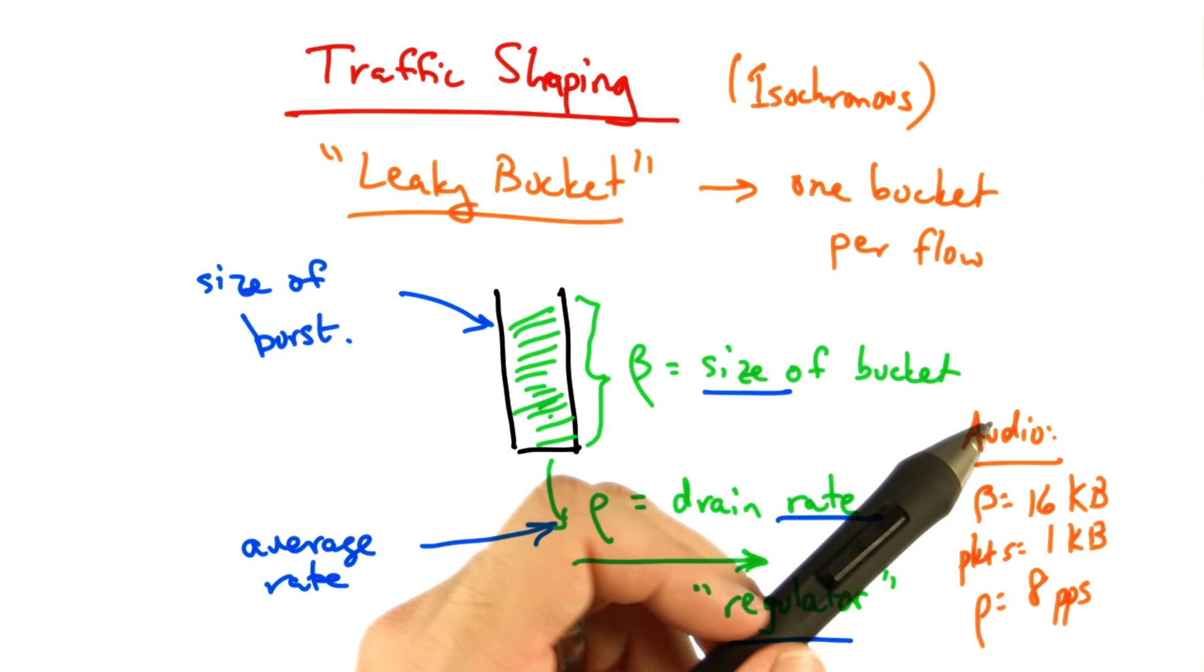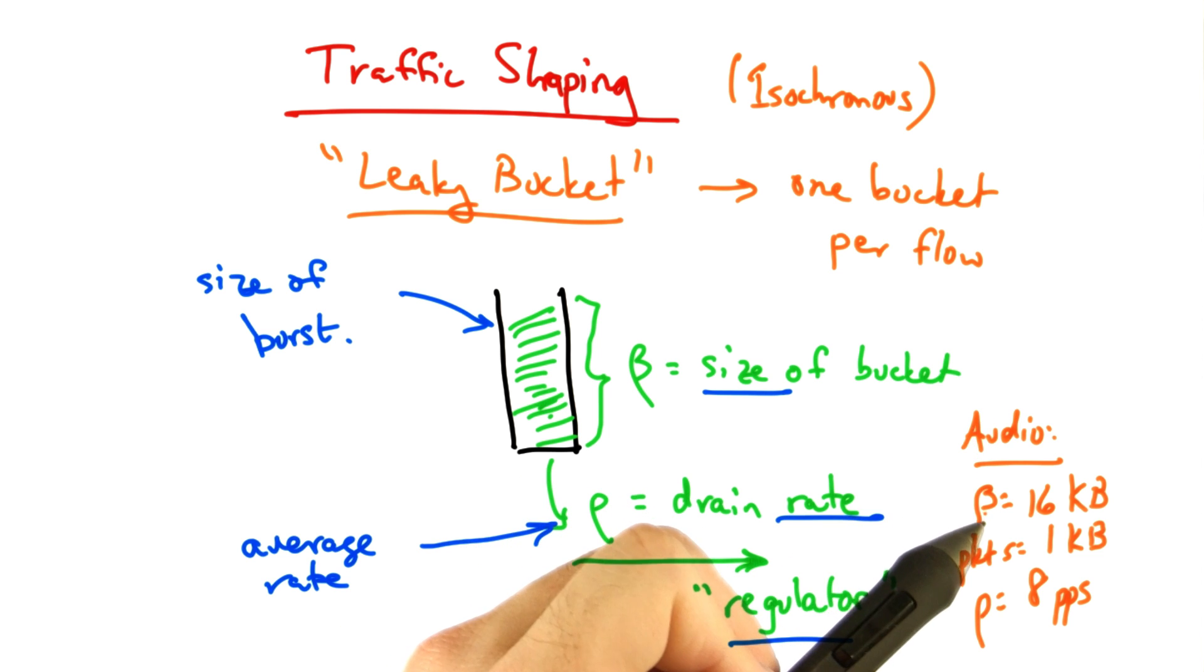For example, for an audio application, one might consider setting the size of the bucket to be 16 kilobytes, so packets of 1 kilobyte would be able to accumulate a burst of up to 16 packets in the bucket.